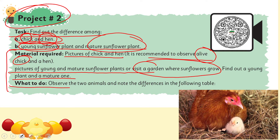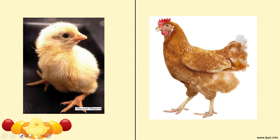Observe the two animals and note the differences in the following table. Here you can see the picture of an adult hen and its baby. You can see a very clear difference in their color, size, beak, and feathers. On one side you can see a mature hen, and on the other you can see a little small chick.